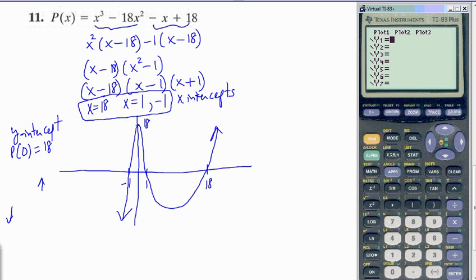Press Y equals. Let's put the function in. X cubed minus 18 X squared minus X plus 18. Press graph. And let's change it to zoom 6. Let's zoom standard. And actually, we want to go up for the Y max. We want to go up to at least 20. I'm going to change mine to 30. Let's graph it.